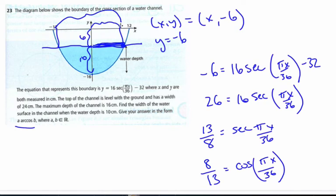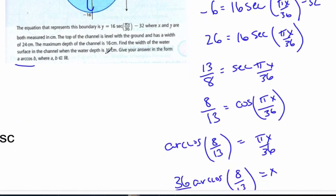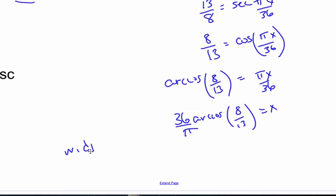I'm looking for the whole distance, which is two of those. So the width equals 2 times 36 over pi arc cosine 8 over 13.